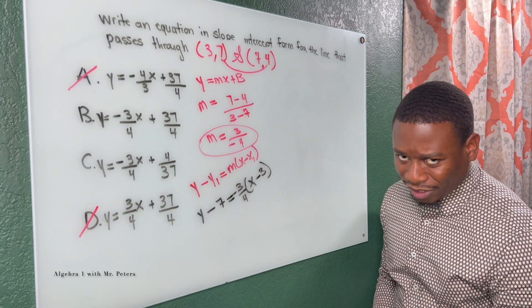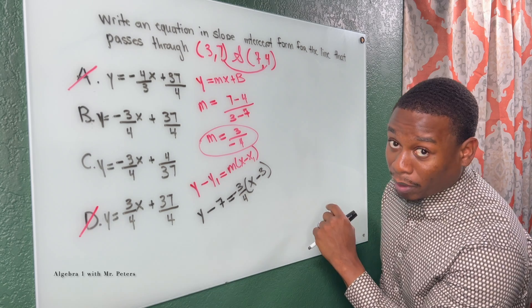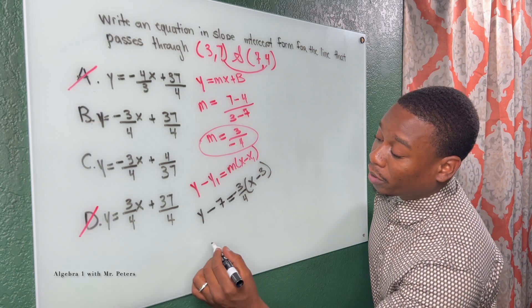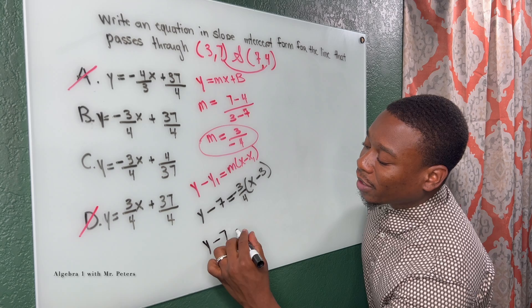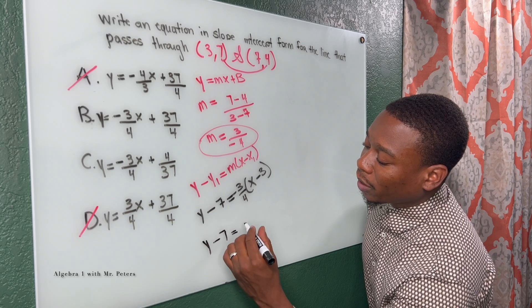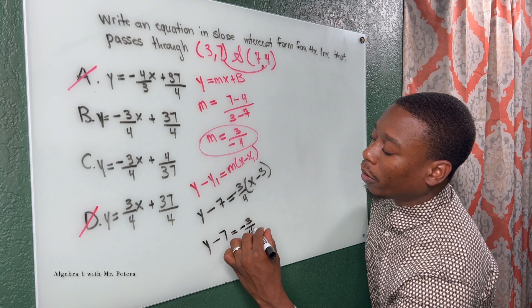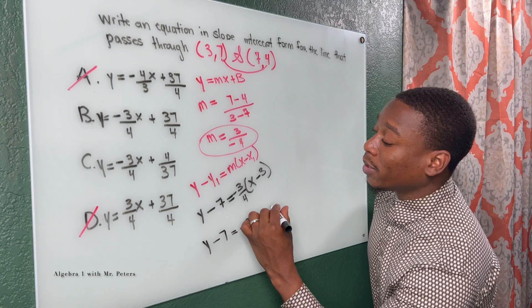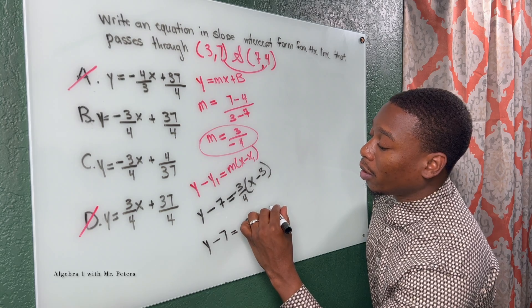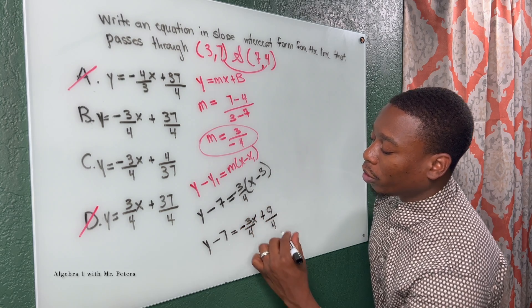Now this is where students make a mistake. Just remember that's going to be positive when we multiply. So y minus 7 stays the same, equal to negative 3 over 4x plus 9 over 4.